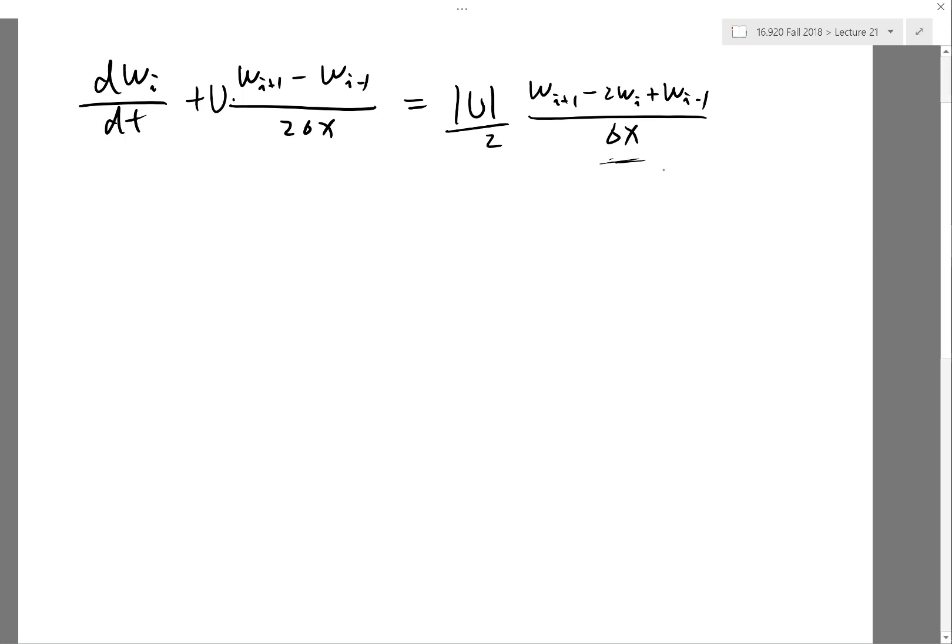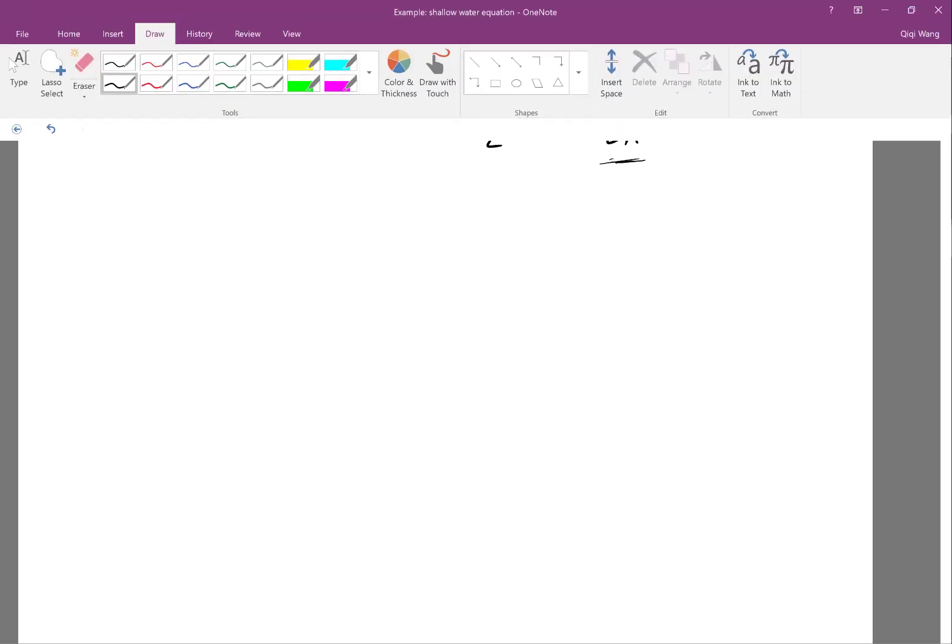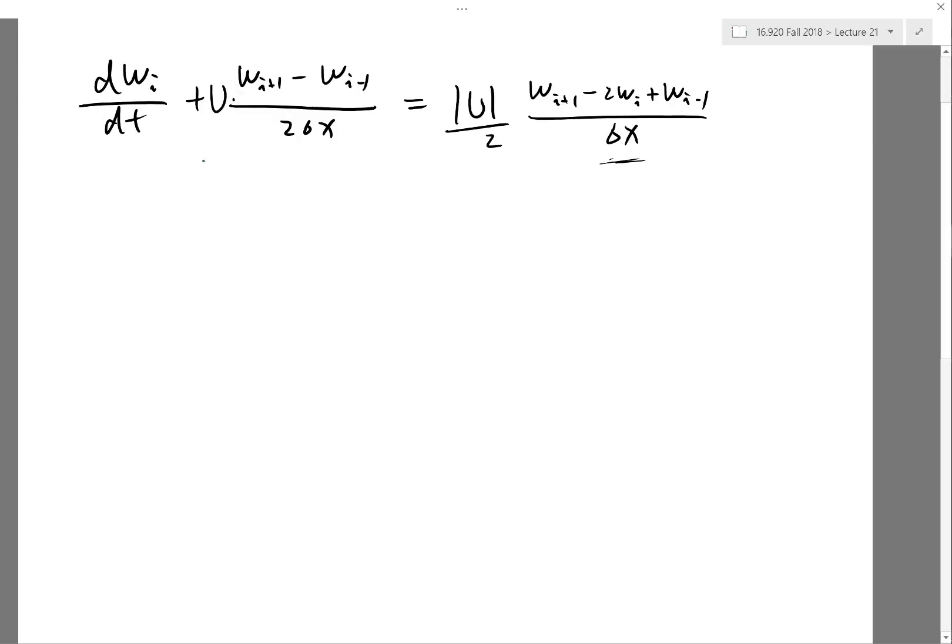So how do we write this as a finite volume scheme? Well, this can be written as Δx times some flux at xᵢ₊₁/₂ minus some flux at xᵢ₋₁/₂. This is what finite volume scheme has to do.